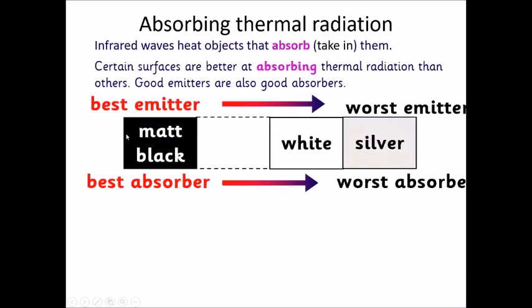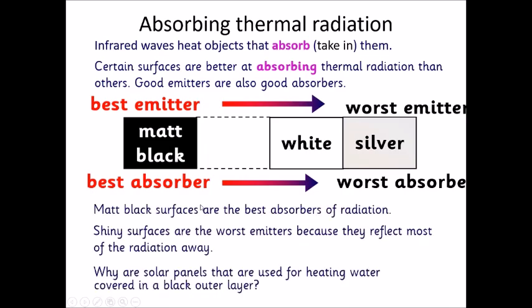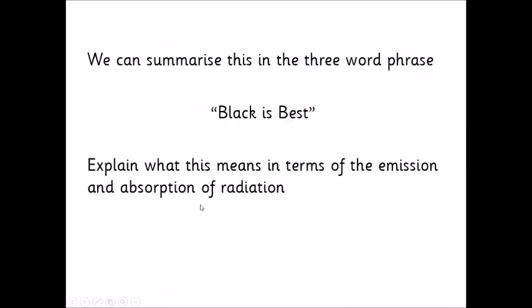So the same principle here. Matte black is also the best absorber, and silver, a shiny silver surface, is the worst absorber. So you see that black is the best. It's the best emitter of radiation and it's the best absorber of radiation. So sometimes we just summarize that by saying that black is the best. It's the best emitter and it's the best absorber.